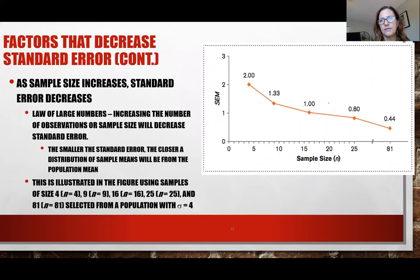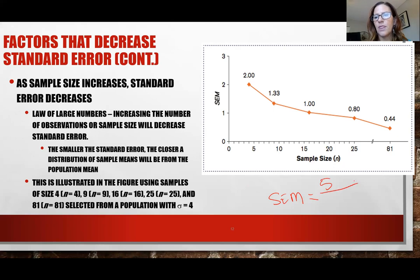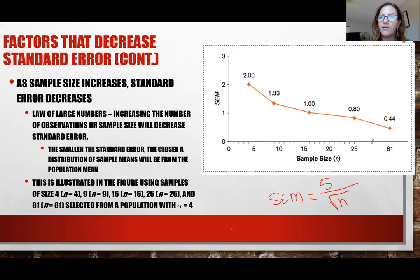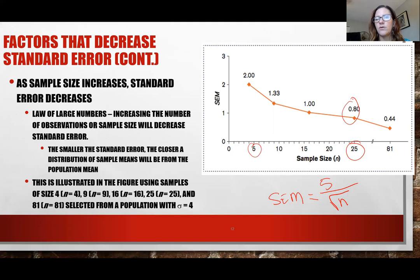As sample size increases, error decreases — think about where sample size sits in the equation. With population standard deviation of 5 and sample size 5, the standard error is about 2. But with a sample size of 25, the error drops to only 0.80. When you see these types of questions, just think about the equation and where things are placed.